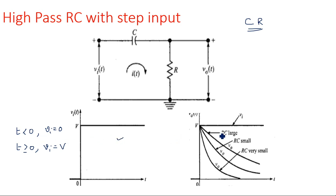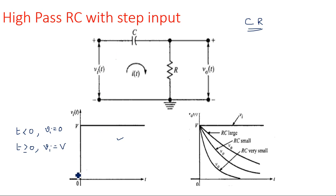Now, how is the capacitor acting for this particular voltage and what are the different possible conditions in the output voltage? Initially, the capacitor is uncharged. Whether it is a low pass or a high pass filter, the capacitor is initially uncharged — we are taking a fresh capacitor that does not have any voltage across it.